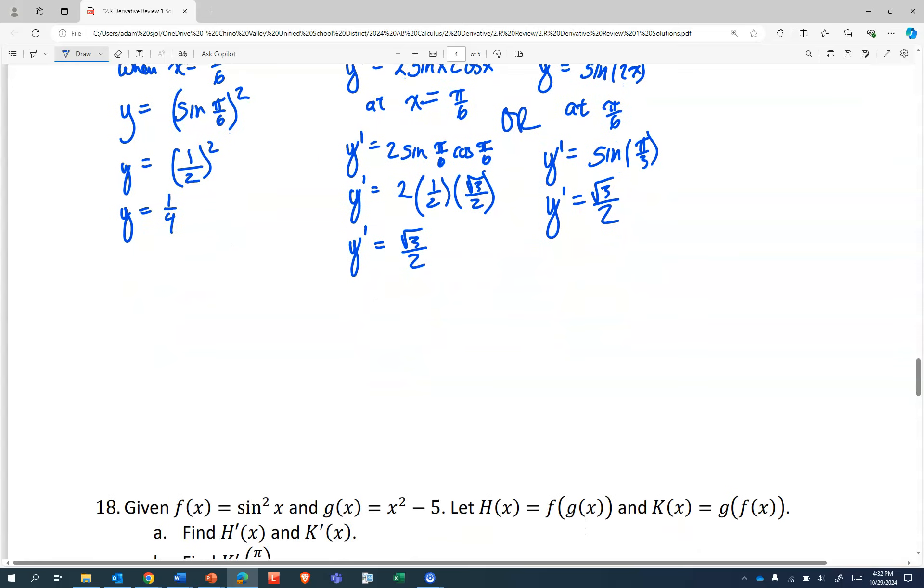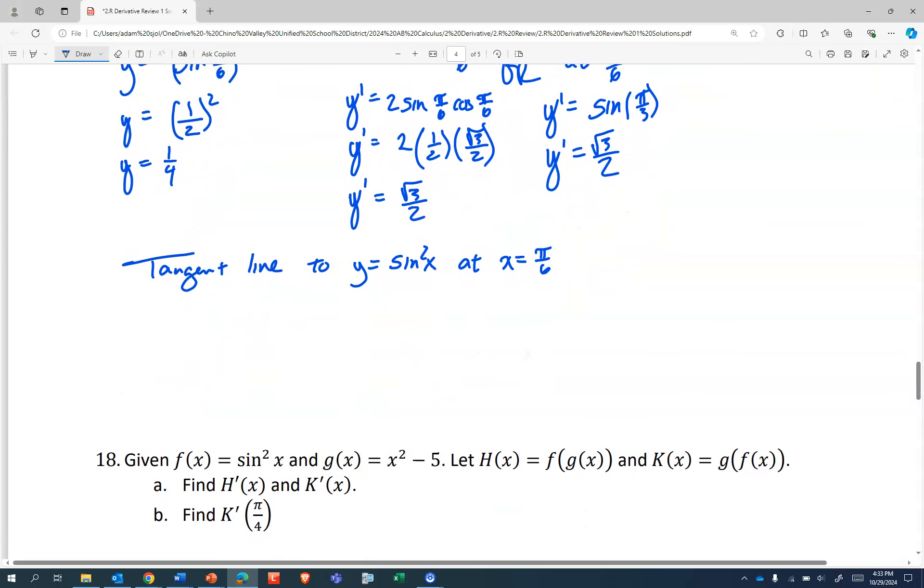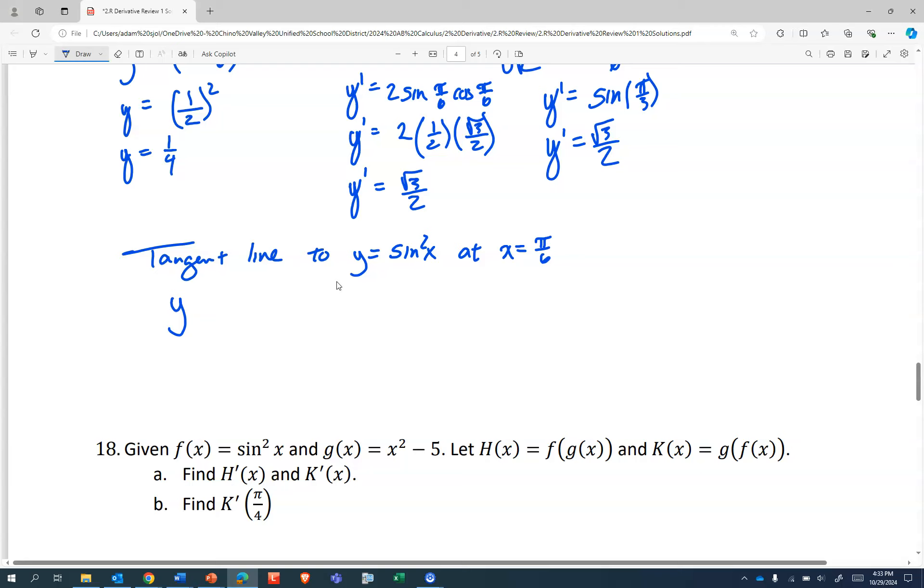And if we want a tangent line and a normal line, probably use some nice notation. Tangent line to sin²x at x equals π/6. My Evelyn is sitting right here with me trying to help. So y minus 1/4 equals √3/2 times x minus π/6.